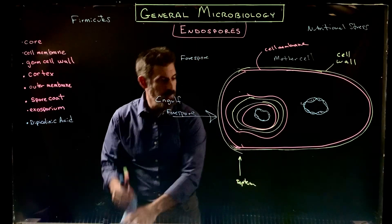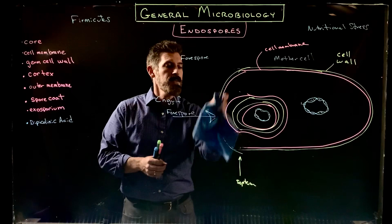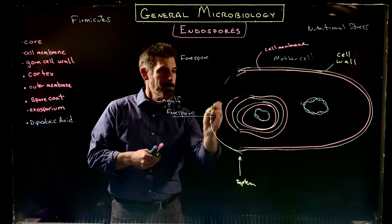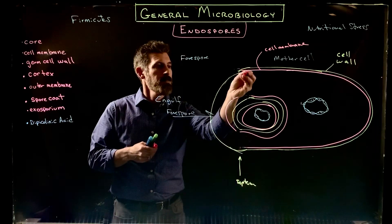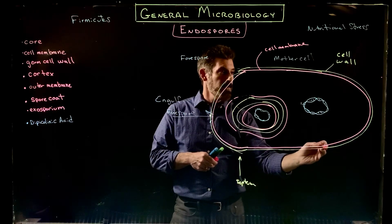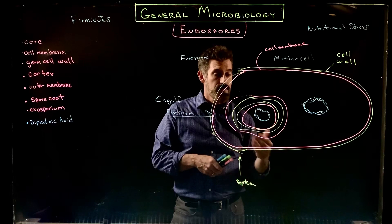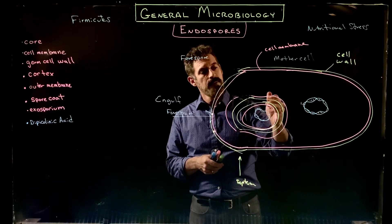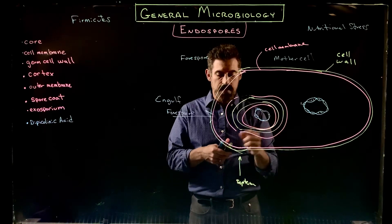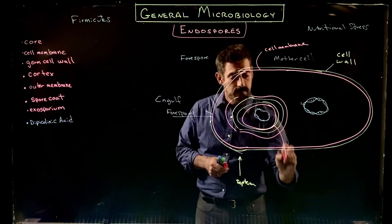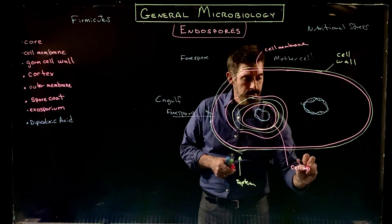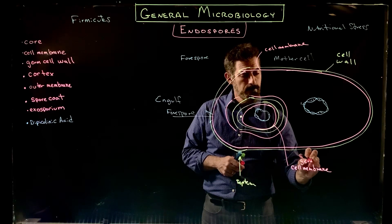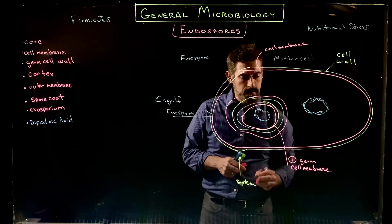Now we have this structure. We still have the mother cell with its cell wall and cell membrane. But now we have this different structure with layers — the pink represents cell membrane, which we're going to refer to now as the germ cell membrane. That's our first layer.